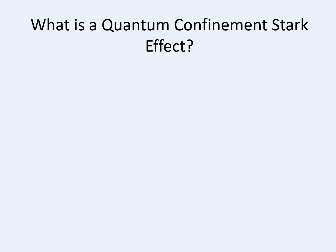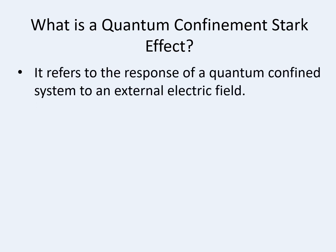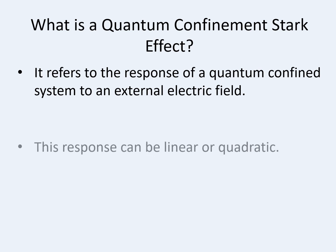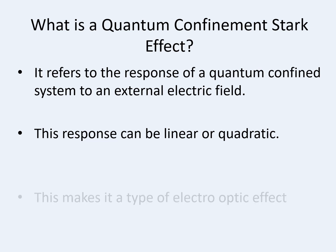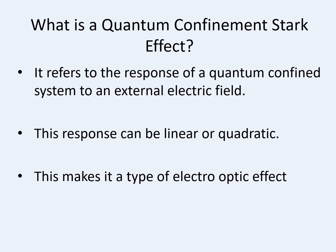What is quantum confined Stark effect? You should already know what a Stark effect means — it is the splitting of atomic spectral lines because of an applied electric field. The same concept applies here: instead of atomic spectral lines, we take a quantum confined system and apply an electric field. The response of a quantum confined system to an external electric field is termed as quantum confinement Stark effect. This response can be linear or quadratic, which makes it a type of electro-optic effect.